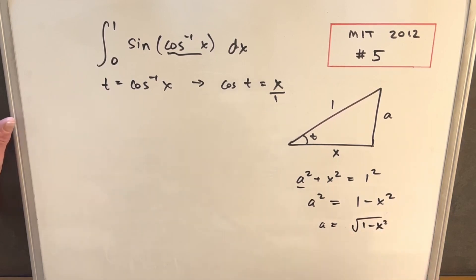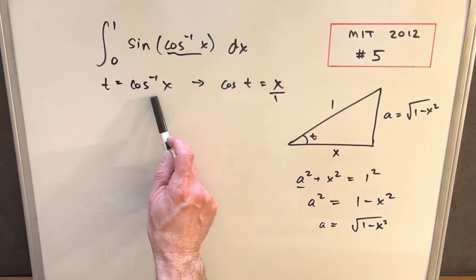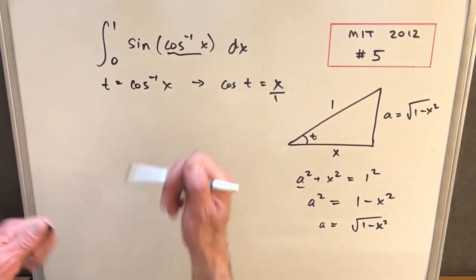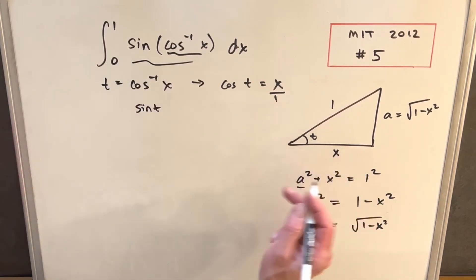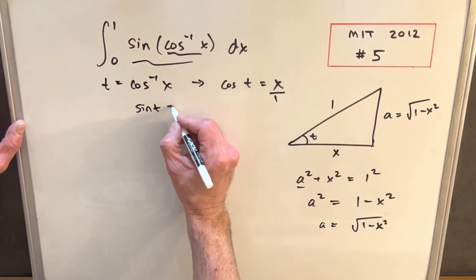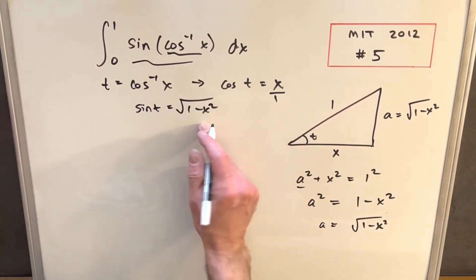We're only interested in the positive value here. It's a positive side, so we'll just use this positive value. Then next, let's get back to our sine expression. If our cosine is t, then this expression here is just sine of t. But with this triangle, we can now find sine of t. Sine is opposite over hypotenuse, so that's just going to be square root of 1 minus x squared over 1, which is just this.